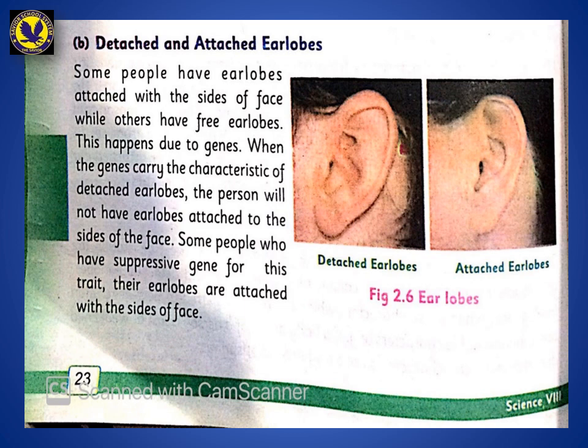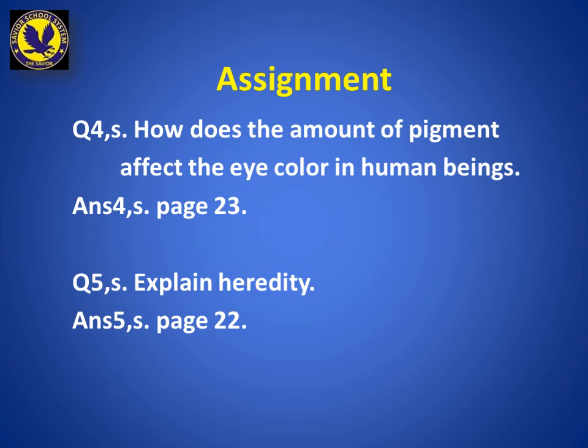آپ کا assignment ہے۔ دیکھیں کہ pigment کی مقدار آنکھوں کے رنگ کو کیسے affect کرتی ہے۔ page number 23 پر eye color کا topic لکھ لینا ہے۔ اور page 22 پر جہاں میں نے نشان لگائے ہیں، short questions کے answers اپنی note copies پر لکھ لیں۔